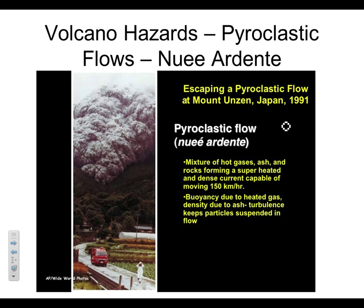The last topic for stratovolcanoes is hazards. Why are these things so dangerous? They're dangerous mainly because of pyroclastic flows — clouds of hot pyroclastics and gases erupted from the volcano. They are very fast, very hot, and have poisonous gases. Three very bad things: fast, hot, and poisonous.